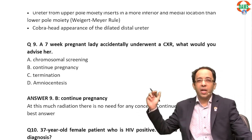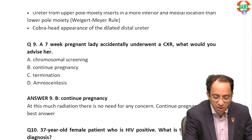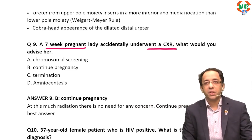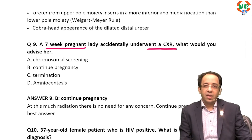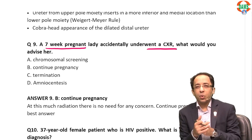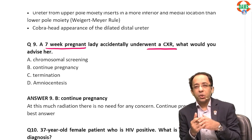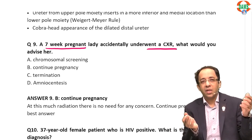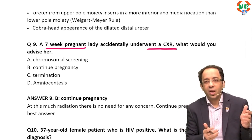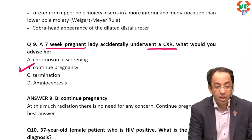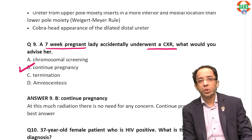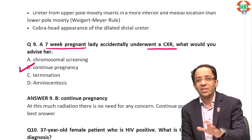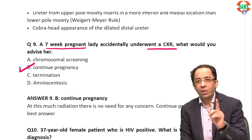A seven-week pregnant lady underwent a chest X-ray — what will you advise her? The chest X-ray has very minuscule radiation, so you are hardly concerned. You will simply reassure her and advise her to continue the pregnancy. The answer is reassurance — this is a common sense question that is a possible FMG exam question.